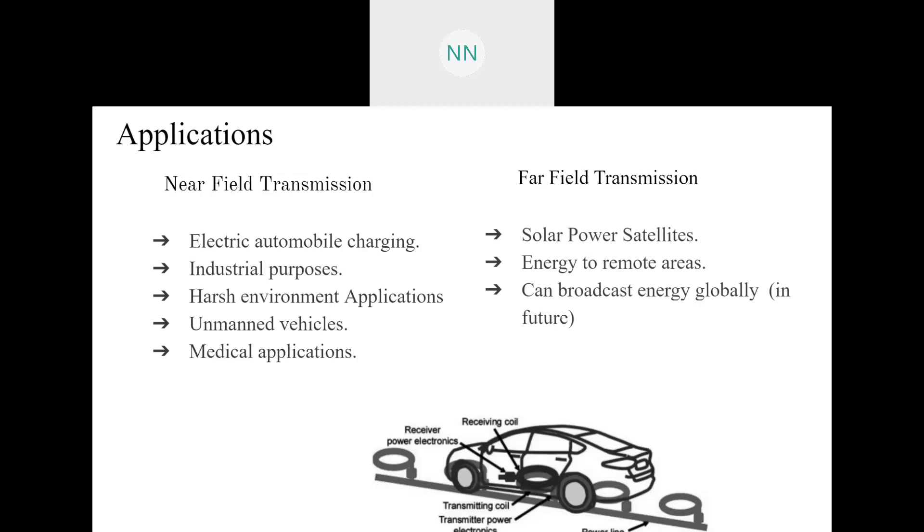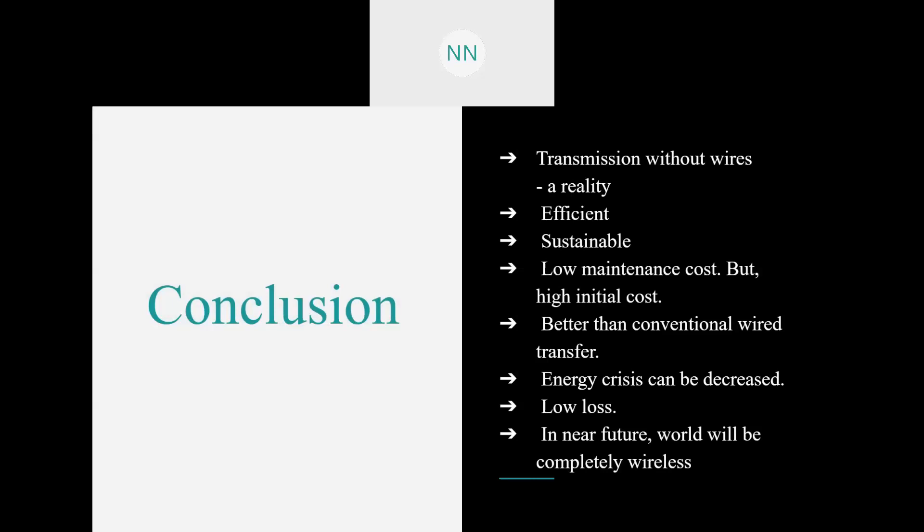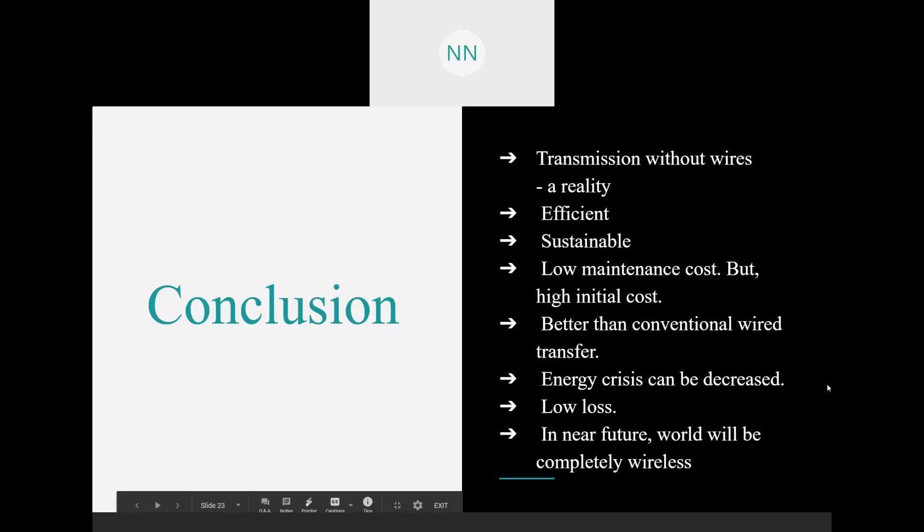Now, coming to our conclusion, from all what I have discussed, it is clear that the wireless power transmission is efficient, sustainable, has low losses, and is surely a solution for the increasing energy demand. Wireless transmission has brought a lot of convenience to the life of humans. Still, people won't stop. The dream of a day when electric cables, adapters, etc. are no longer necessary has driven the research of wireless power transmission. It is sure that in the near future, the world would be completely wireless and wireless power transmission would become a boon to the next generation. With that, I have come to an end of my presentation. Thank you.